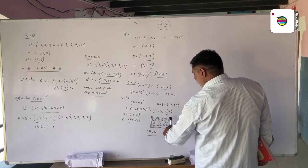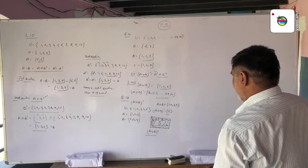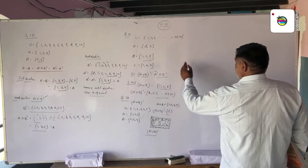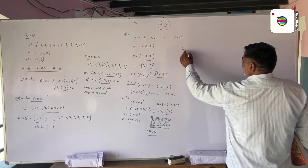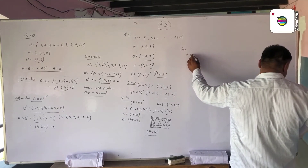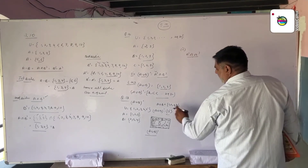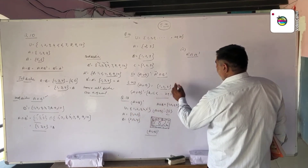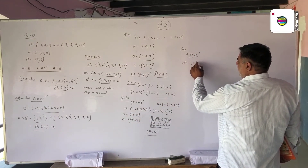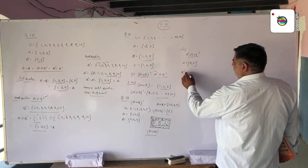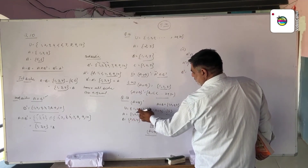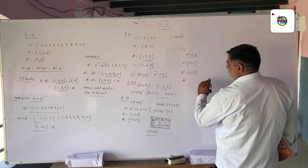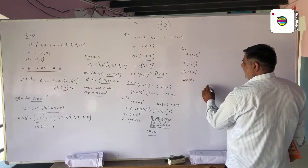Now we make the Venn diagram. This is set U, this is set A, this is set B. In the A union B, all elements of A and B are counted. The remaining element of U is outside. We dark the outer area only — this is the Venn diagram of (A union B)'. For A' intersection B': A' = {4, 5}, B' = {1, 5}, so A' intersection B' = {5}.